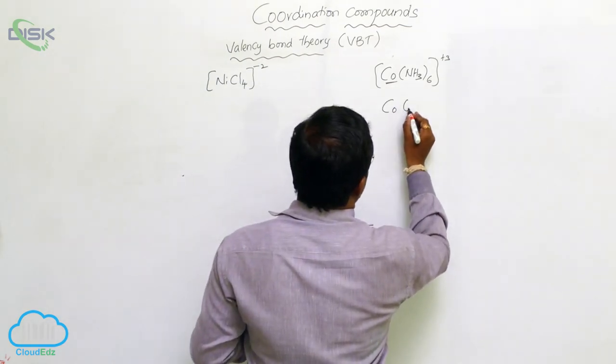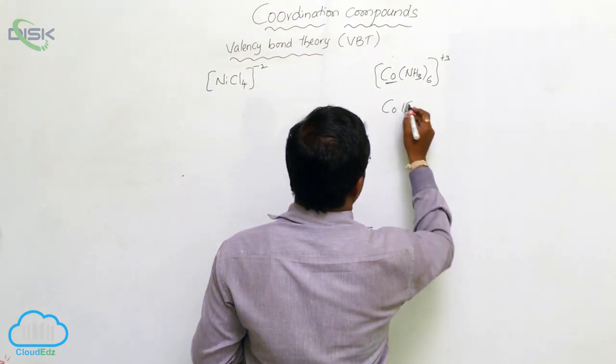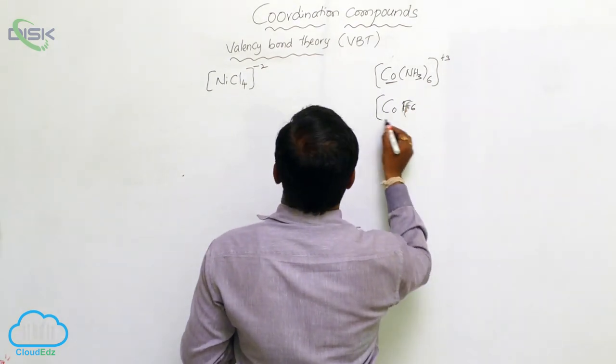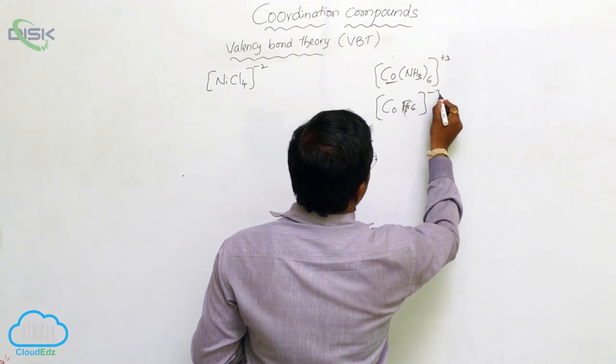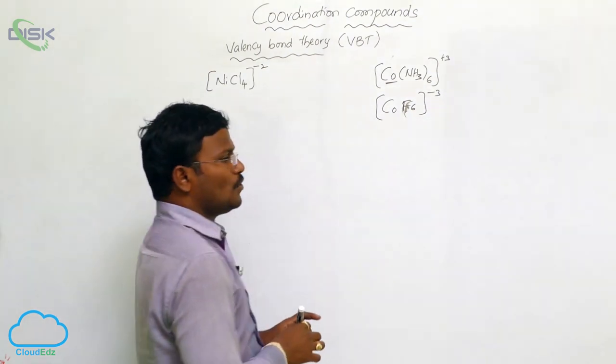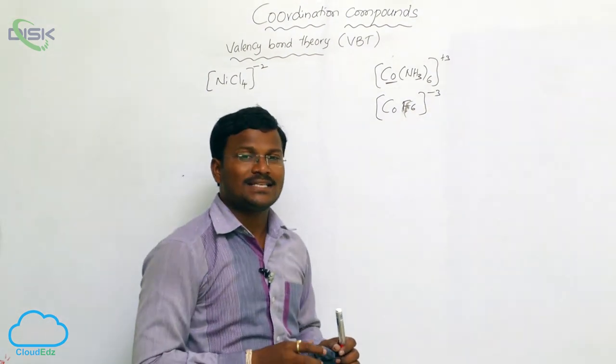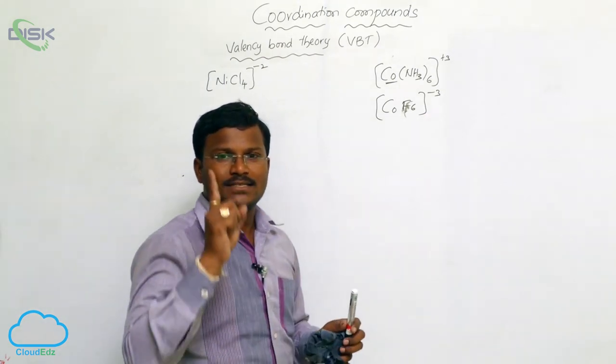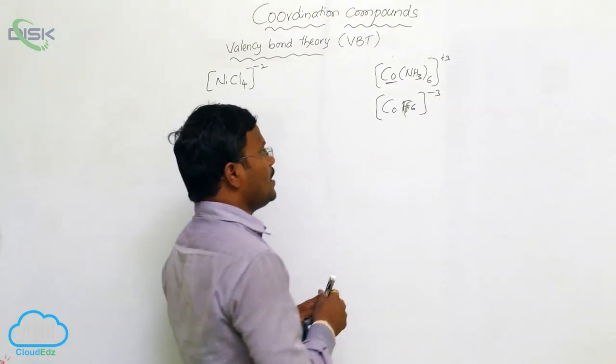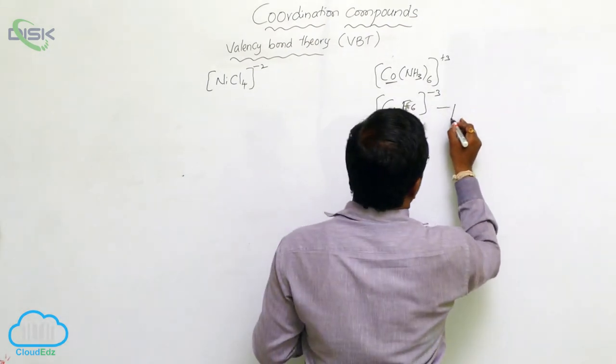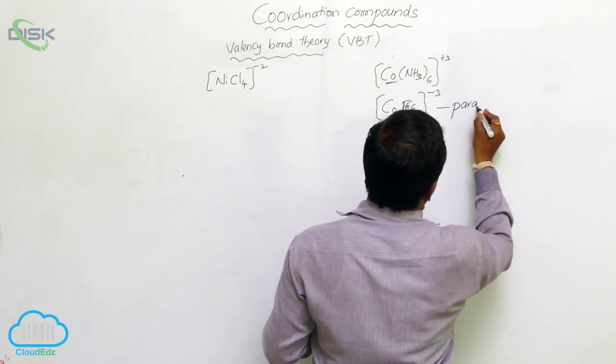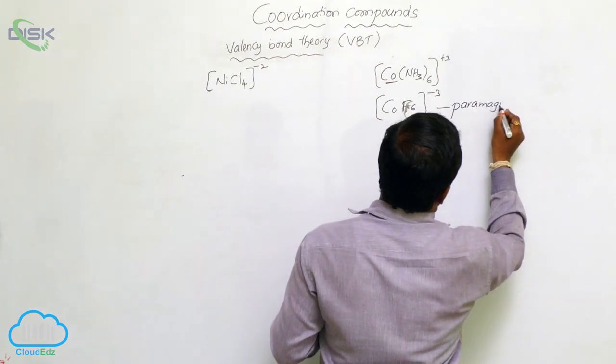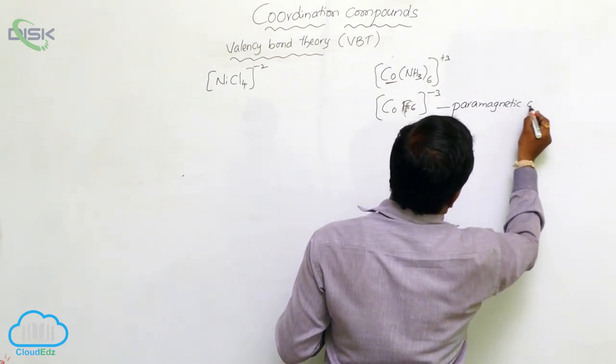In this compound, the three orbital, 3D series orbitals, four orbitals with single electrons or single unpair electron. Hence, these molecules will exhibit paramagnetic character. Paramagnetic character.